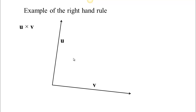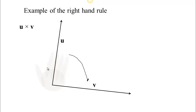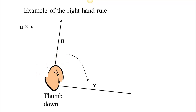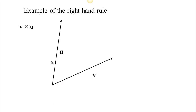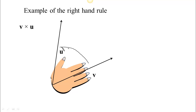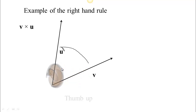Another example: u cross v again, but with different vector orientations. Since u is the first one, put your hand in the direction of u. To curl your fingers towards v, your thumb is going to have to go down — so u cross v is into the screen in this case. Then for v cross u with these orientations: put your hand in the direction of v, and as your fingers curl toward u, your thumb comes up. So v cross u is out of the board in this case.